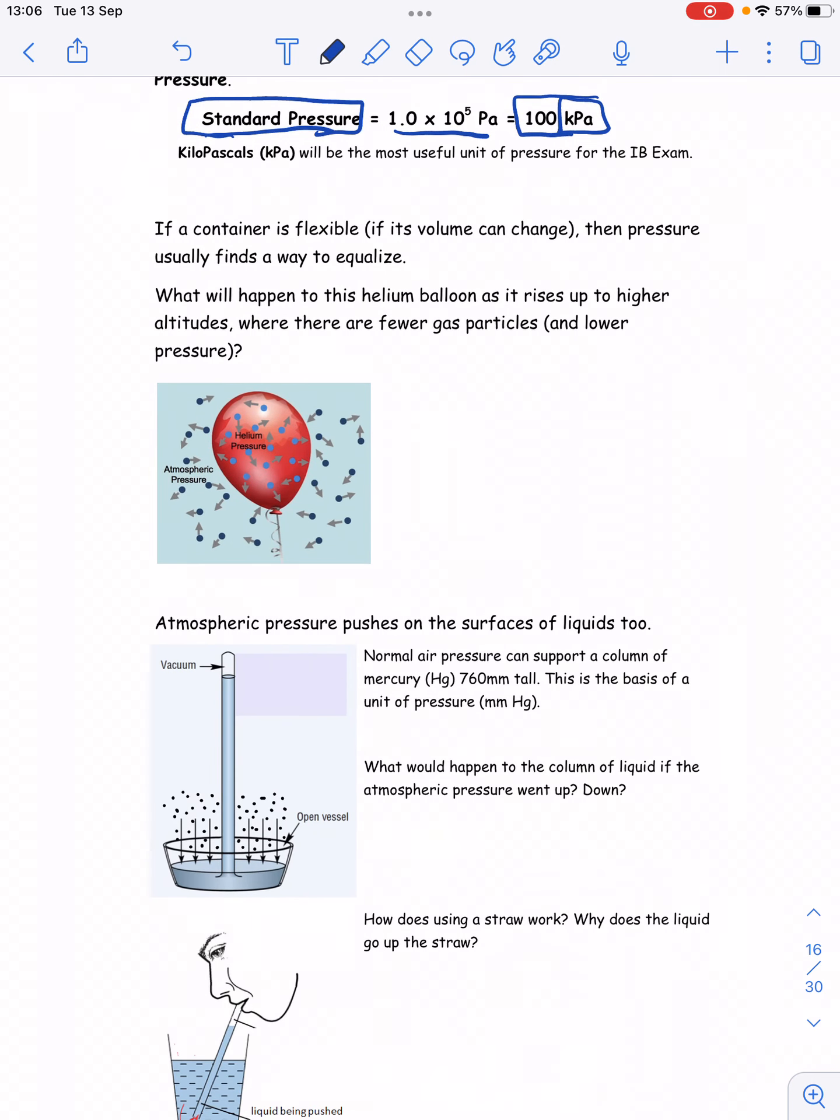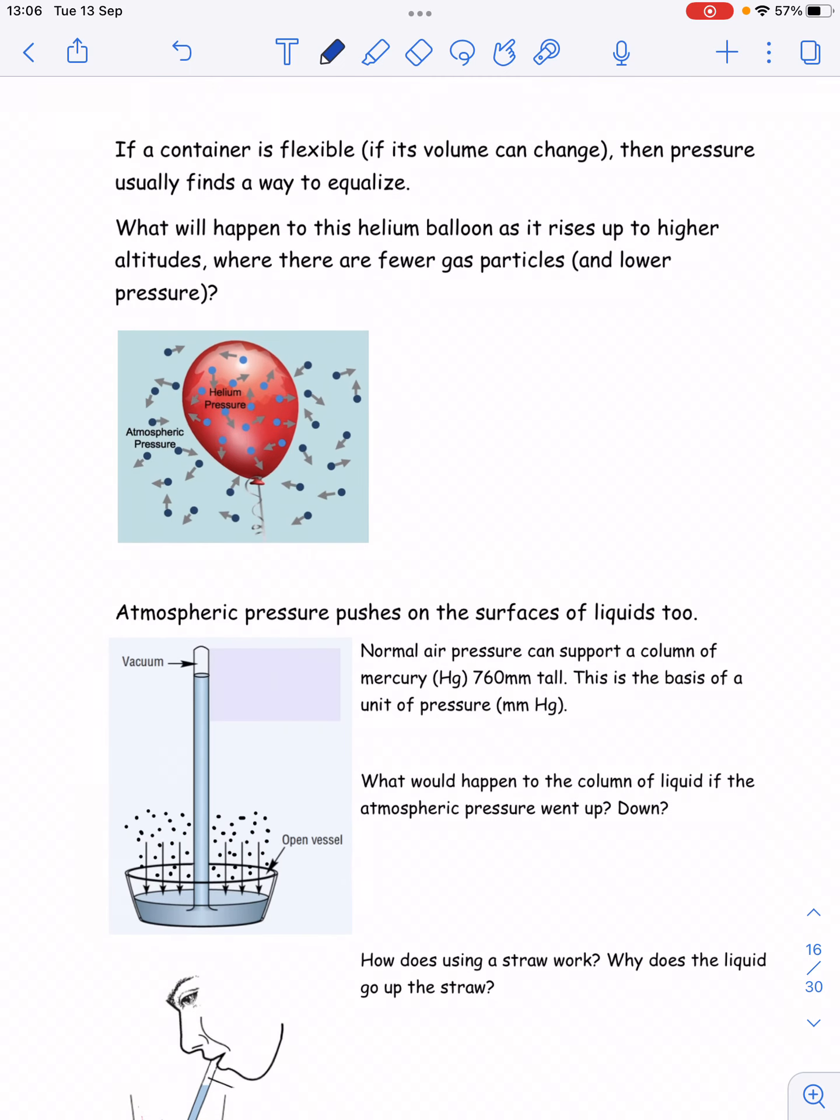Okay. So thinking through a couple of examples here, what would happen to this balloon as it rises up to higher altitudes where there are fewer gas particles and therefore lower pressure. So if there's less particles around it, so I'll just draw fewer than are in that picture, then the combined pressure on the outside of the balloon will be lower.